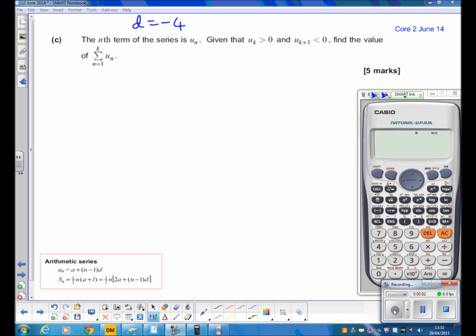Okay, so once again with this paper, part C of the question is the thinking part, but it's slightly tricky. Now it tells us the nth term of the series is un. Given that uk is greater than 0 and uk+1 is less than 0, find the value of the sum from 1 to k of un.